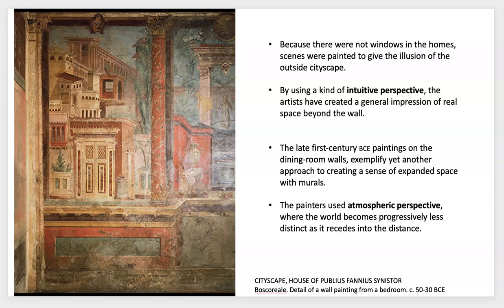Some important things to consider are the various ways that perspective was starting to be taken into consideration by artists making these paintings. Around this time they were really trying to figure out different forms of perspective. Intuitive perspective was about trying to make it look like there really was a space beyond the wall — making murals and paintings that portrayed a sense of depth.